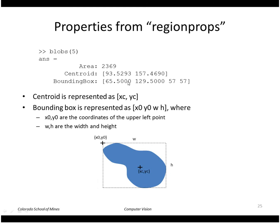Centroid is a two-element vector xy of the center of the region, as shown here. Bounding box is the starting upper-left corner and the width and height of the blob.